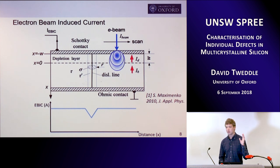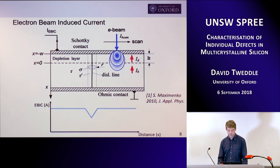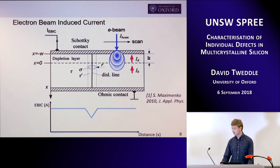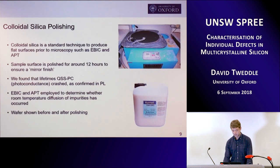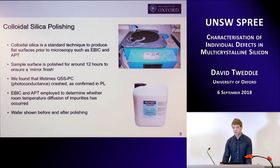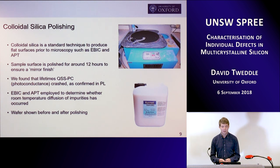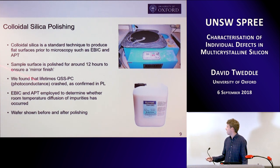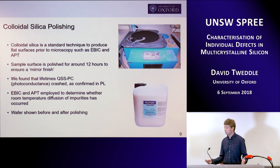In order to do EBIC, you need a flat surface so that surface effects don't influence your measurements. The standard thing that material scientists do is colloidal silica polishing just to get a flat surface. However, when we did this colloidal silica polishing, we found that our lifetimes absolutely crashed and we also got very low counts in PL. We were confused, because this is a really standard technique used in material science. So we used EBIC and Atom Probe to see what was actually going on.